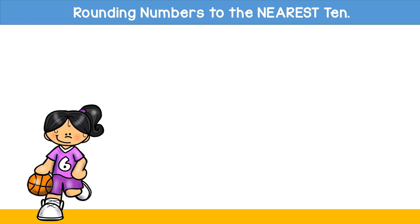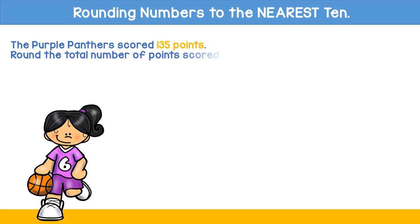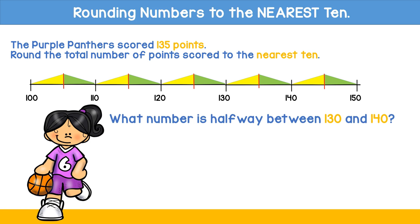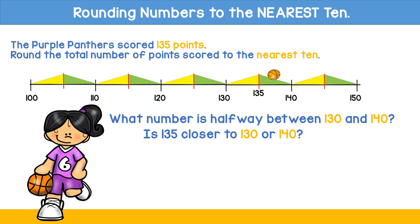Let's try one more example. We're going to round numbers to the nearest ten again, but this time it's slightly different. The Purple Panthers scored 135 points. Round the total number of points scored to the nearest ten. This is a three-digit number but I'm not going to be rounding to the nearest hundred — it's to the nearest ten, so be careful. On the number line I'm still counting by tens. I know that 135 is greater than 130 and less than 140. What's in the middle of the two? 135. Now this is interesting — when it falls right on that halfway point, what we do is always round up. So 135 rounds up to 140.